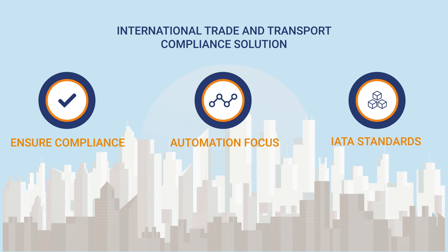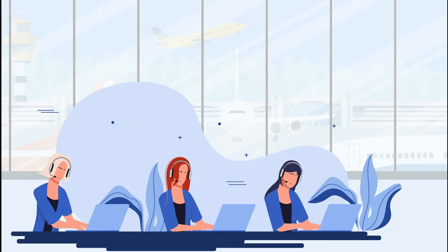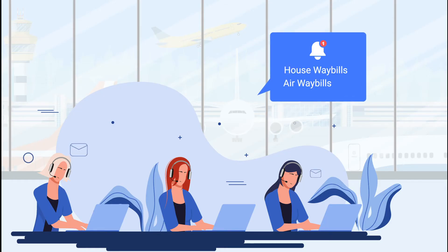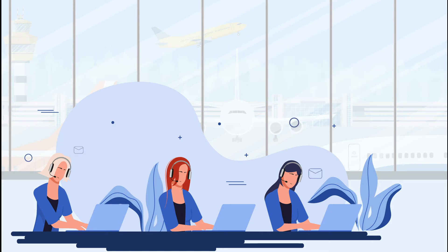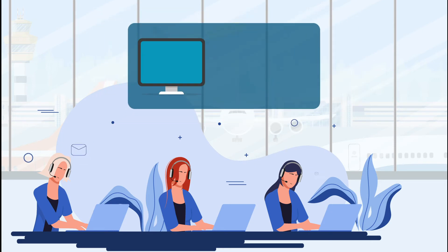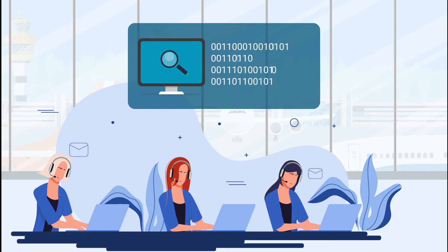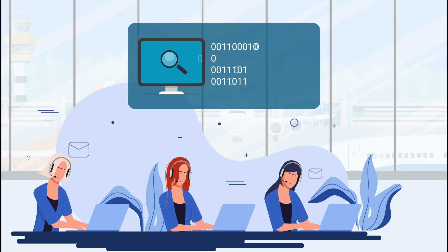Here is a simplified demonstration of how the application works behind the scenes. Every time booking requests or airway bills and houseway bills with shipment details are received, ITTS automatically uses the information from these messages to perform a series of compliance checks and returns the results of these checks in less than one second.